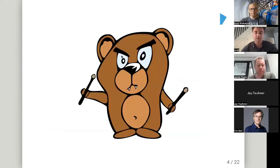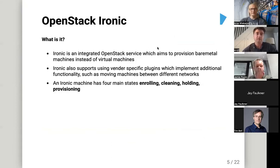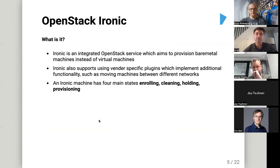I'll go into a bit about our use of Ironic. OpenStack Ironic is the bare metal service — I'm not going to teach people to suck eggs, but Ironic is an integrated OpenStack service which aims to provision bare metal machines instead of virtual machines. It also supports vendor-specific plugins for additional functionality such as moving machines between different networks. An Ironic machine has four main states: enrolling, cleaning, holding, and provisioning.